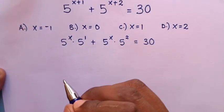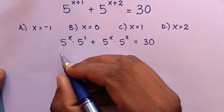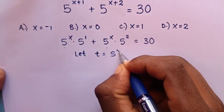In the next step, 5 power x is common, so we will let t equal 5 power x.